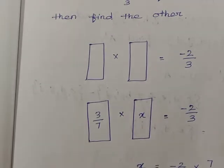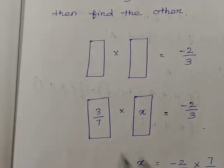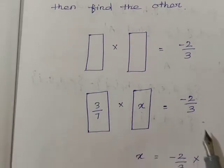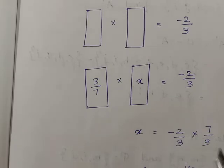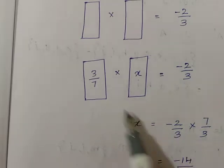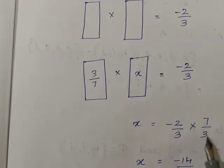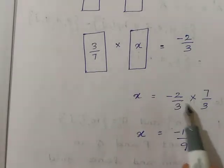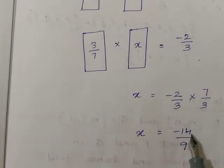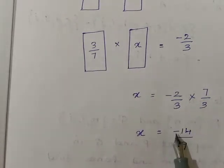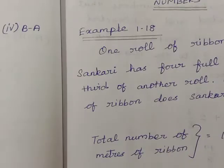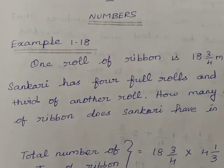Let the unknown value be x. So x multiplied by 3 by 7 equals minus 2 by 3. The relationship between x and 3 by 7 is multiplication, so when you take it to the other side it becomes division. The division number becomes its reciprocal, so 3 by 7 becomes 7 by 3. So x equals minus 2 by 3 multiplied by 7 by 3. No cancellation is possible, so multiplying directly: 2 sevens are 14, divided by 3 threes are 9. Minus into plus gives minus, so the answer is minus 14 by 9.